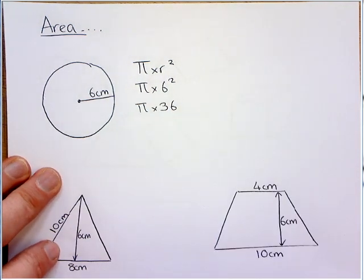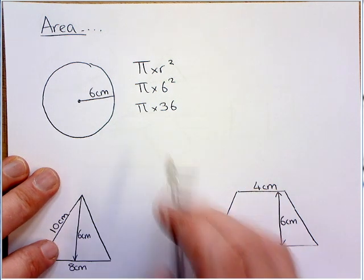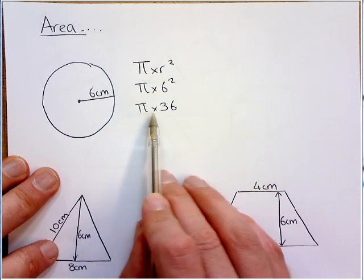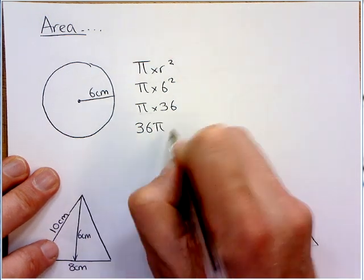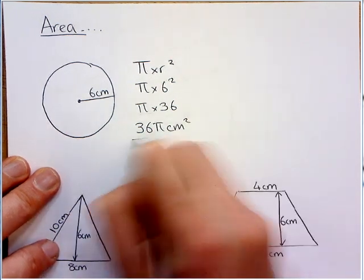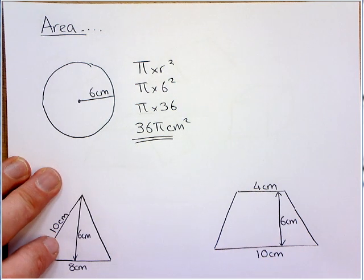And because I don't currently have a calculator and in non-calculator exams they could ask you to leave your answer in terms of pi which means just basically write how many pis there would be. So there we have it, 36 pi centimeters squared.